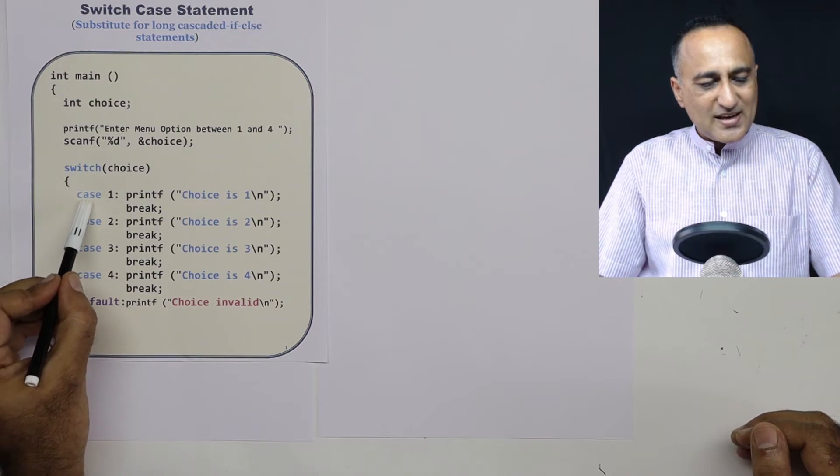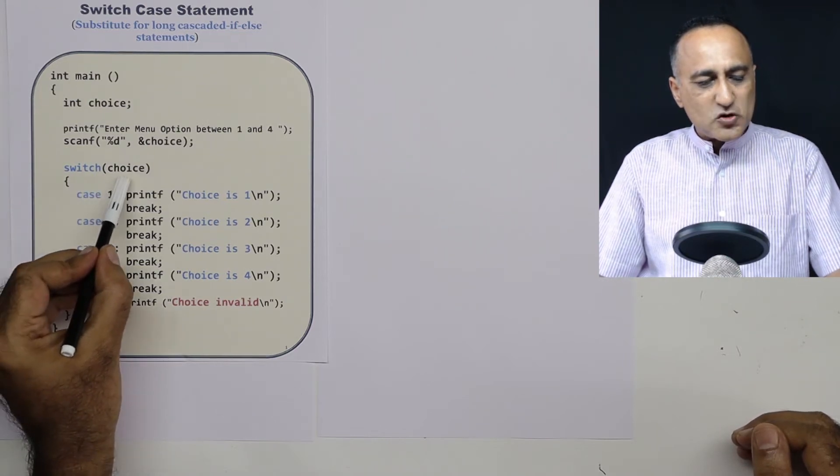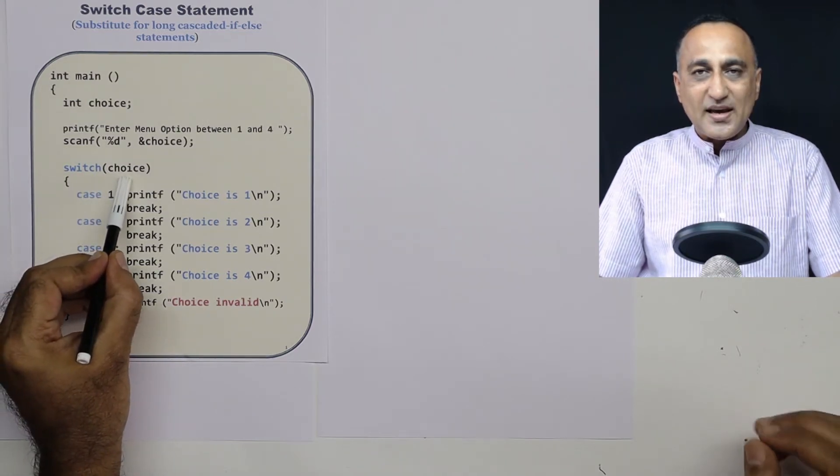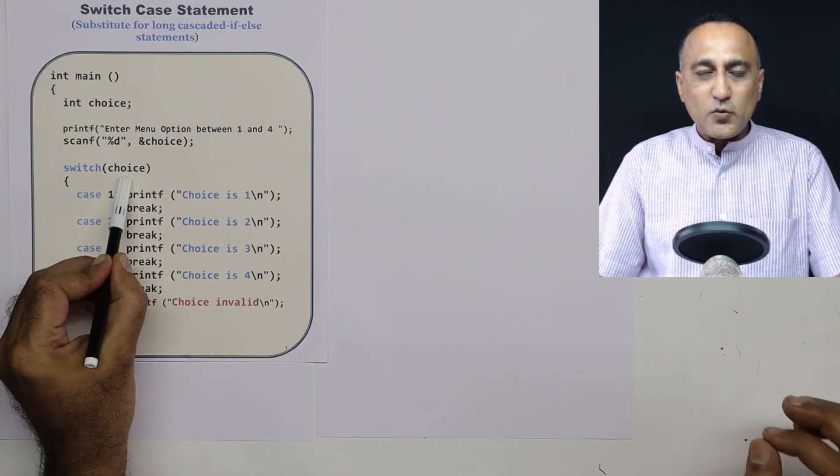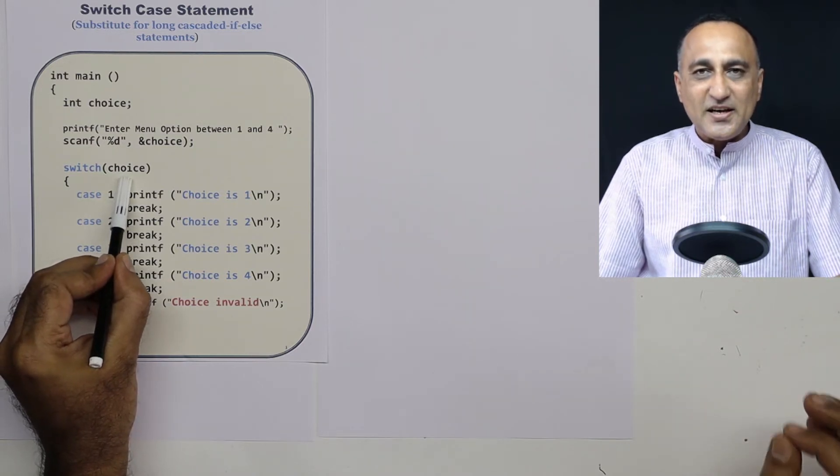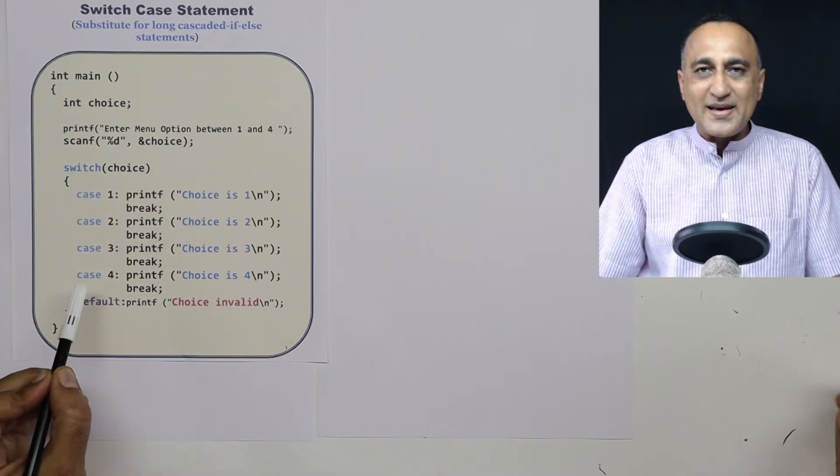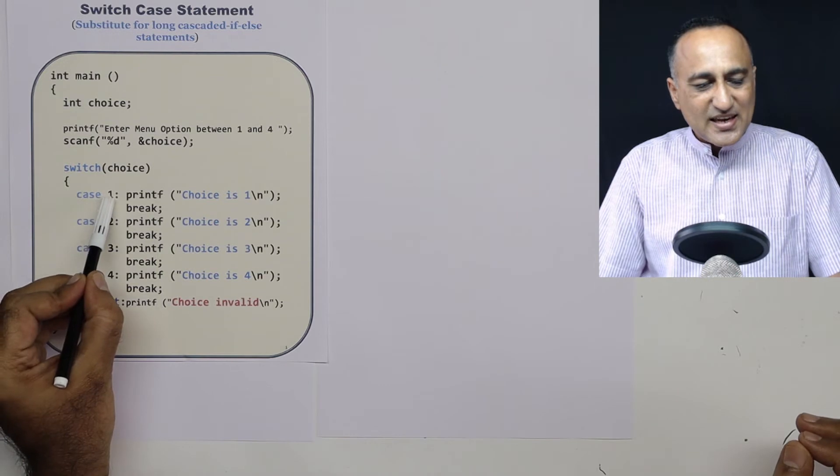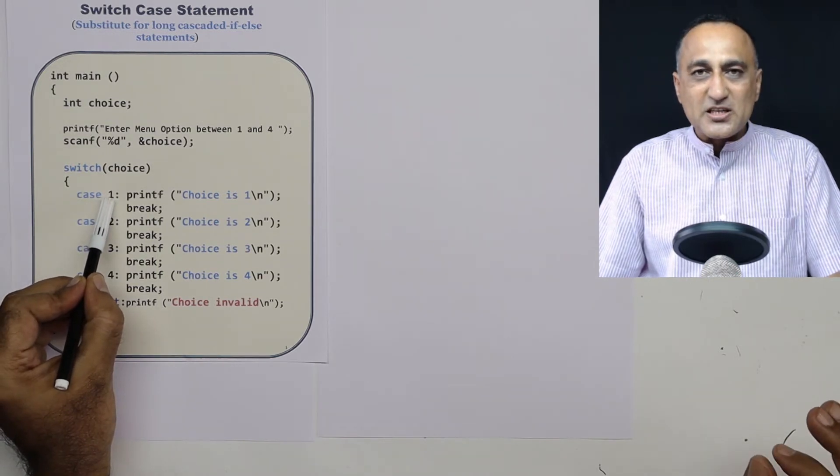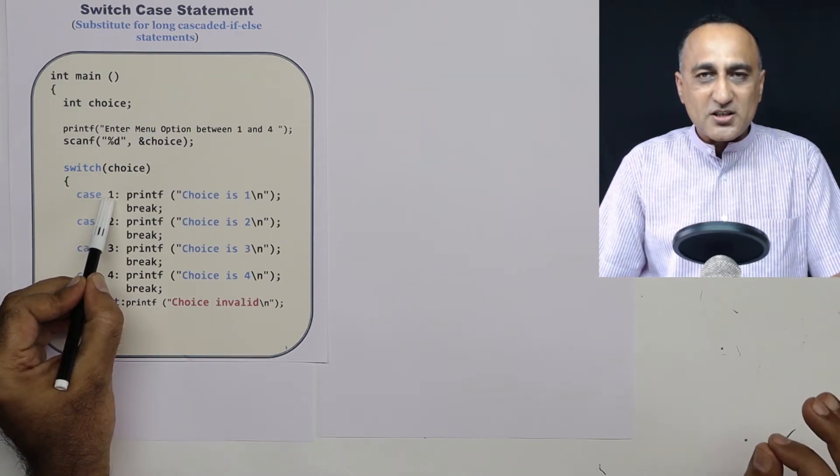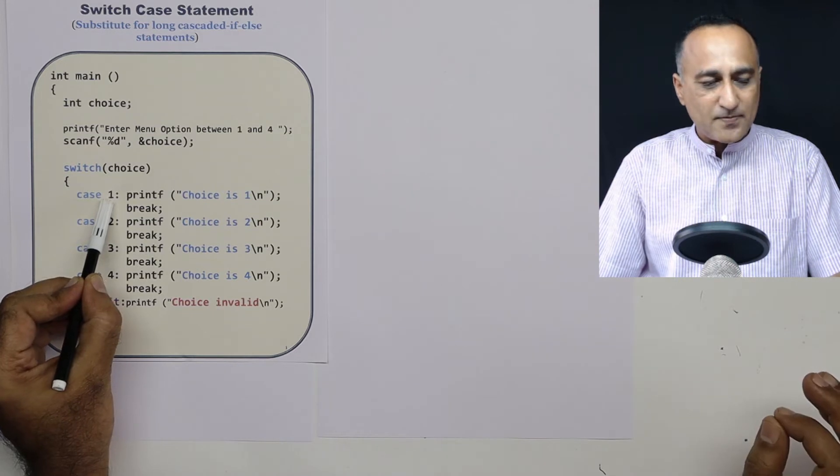So switch, case are all keywords. This choice has got to be an expression or a value which results in an integer number. All of these 1, 2, 3, 4 are known as case labels. These can be expressions, but they must evaluate to a constant of the type integer.